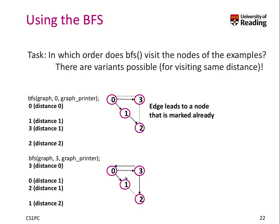Starting from node three is slightly different. First, we put node zero and node two into our queue. We start processing node zero and find node one as a neighbor. We also find an edge back to three, but we have already visited node three, so we don't put it into the queue again. From node one, we find node two as a neighbor, but node two has already been visited in the queue, so we skip it as well.